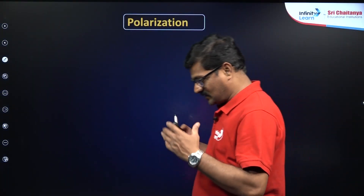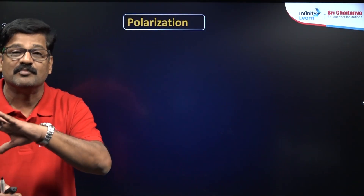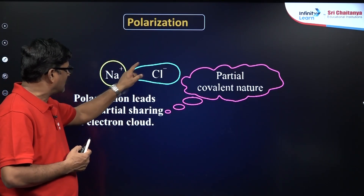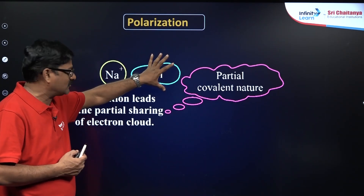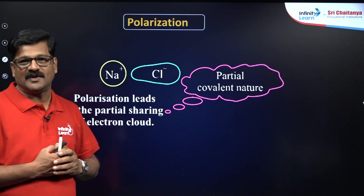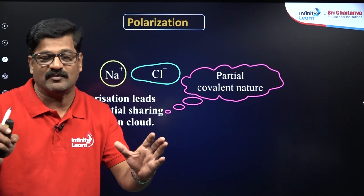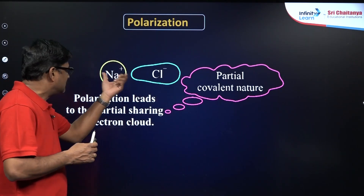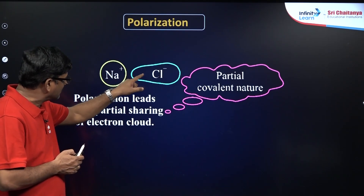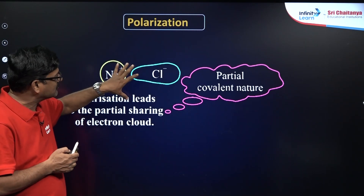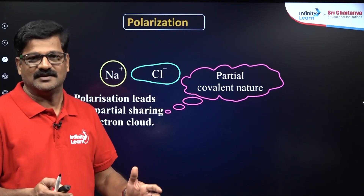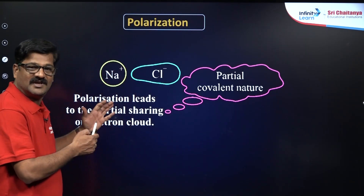So let us talk about what is Fajan's Rule. Fajan's Rule is based on polarization. What is polarization? Take sodium chloride — sodium is a cation and chlorine is an anion. The anion is rich with an electron cloud, so that electron cloud of the chlorine is pulled towards the sodium. What happens is the shape of the anion is deformed. This phenomenon is called polarization. Because of this polarization, part of the electron cloud is shared between the two atoms, giving a partial, little bit of covalent character. This is the basis of Fajan's Rule.